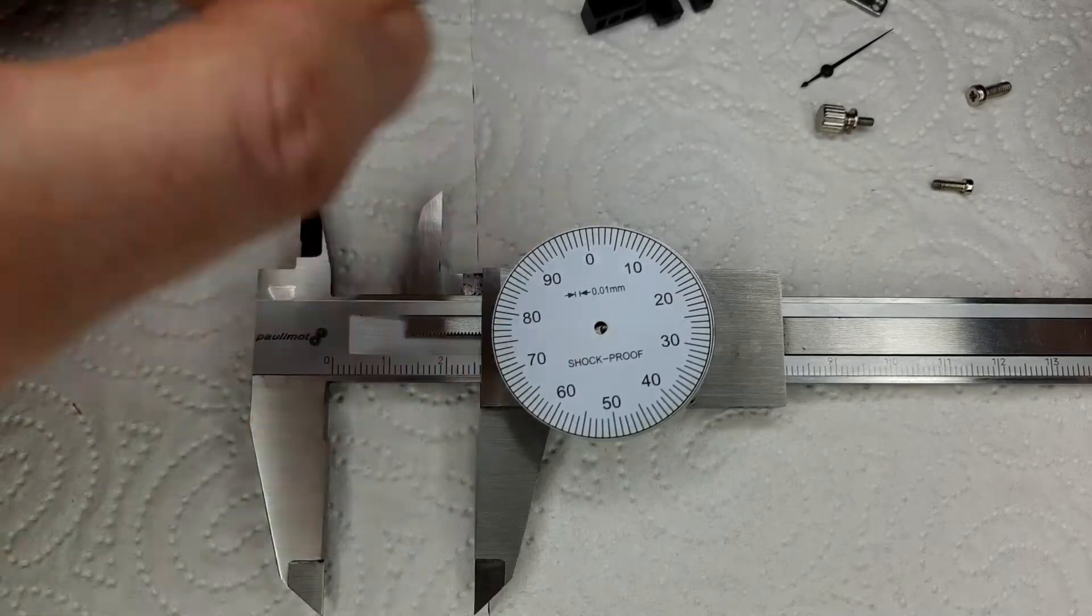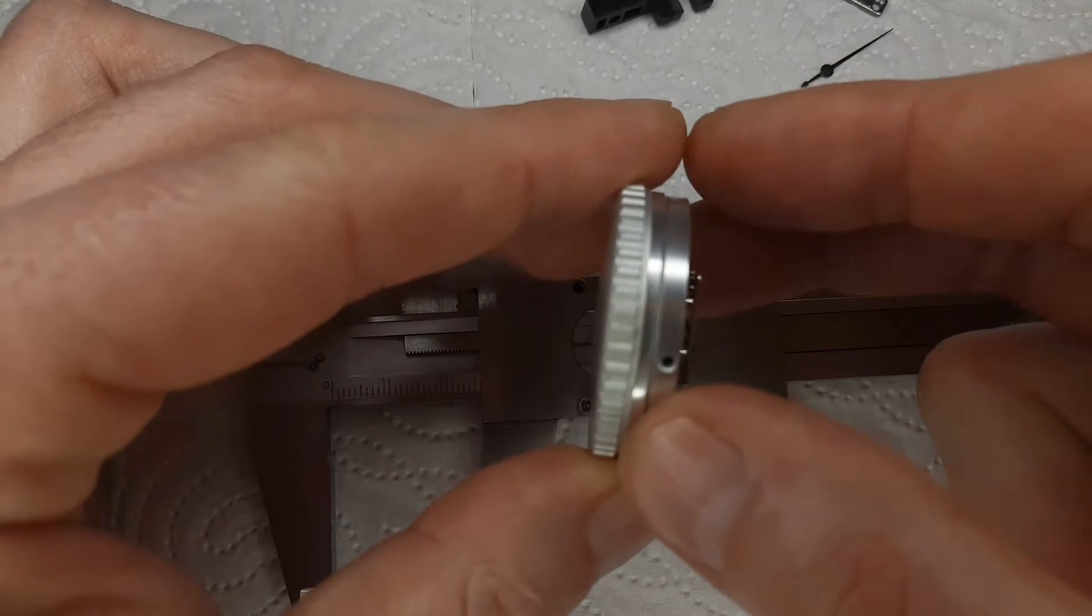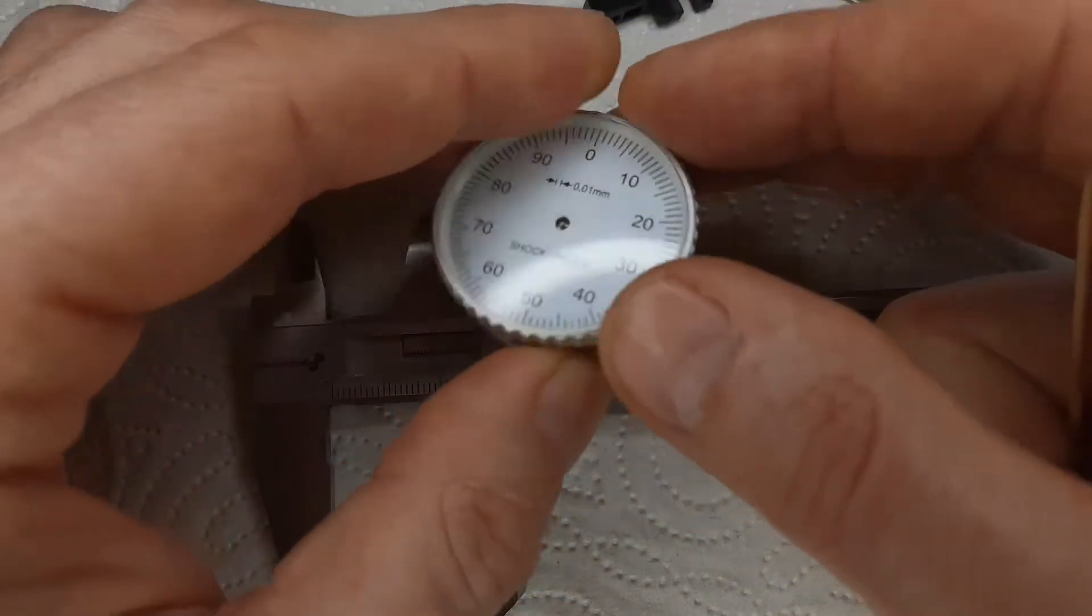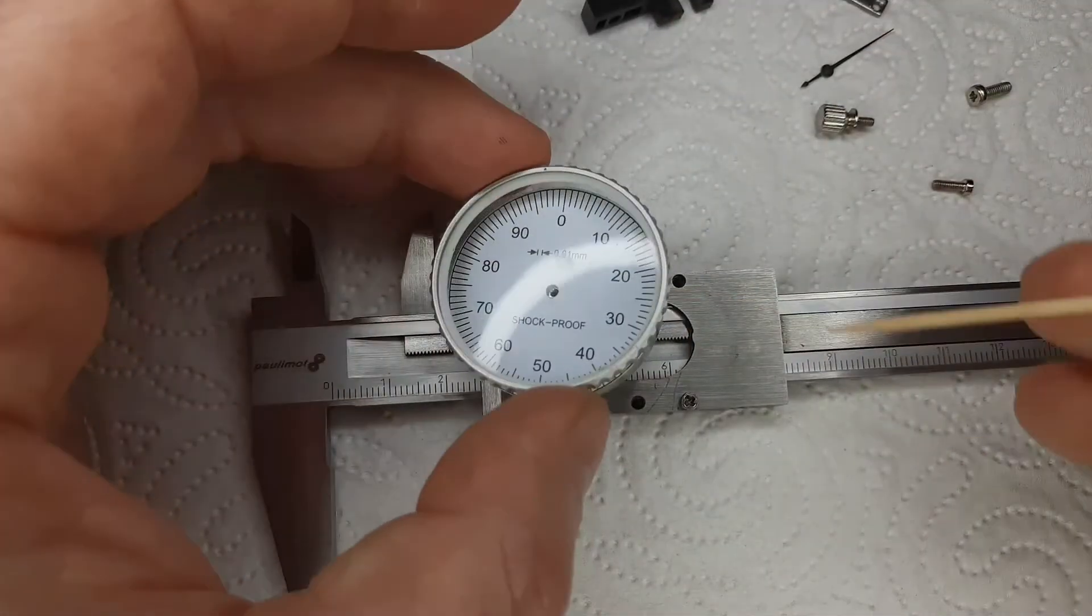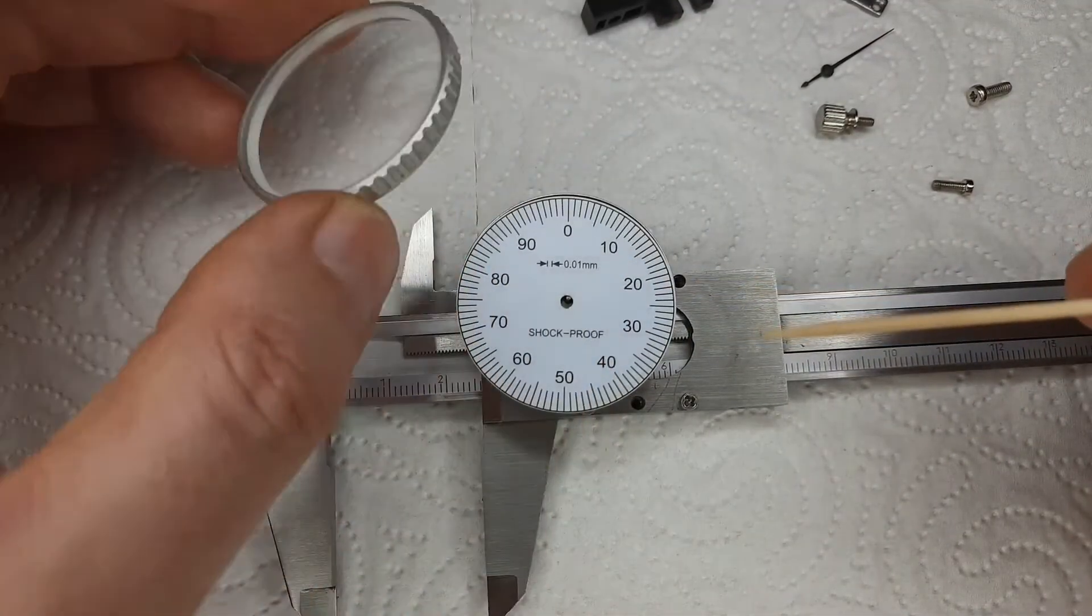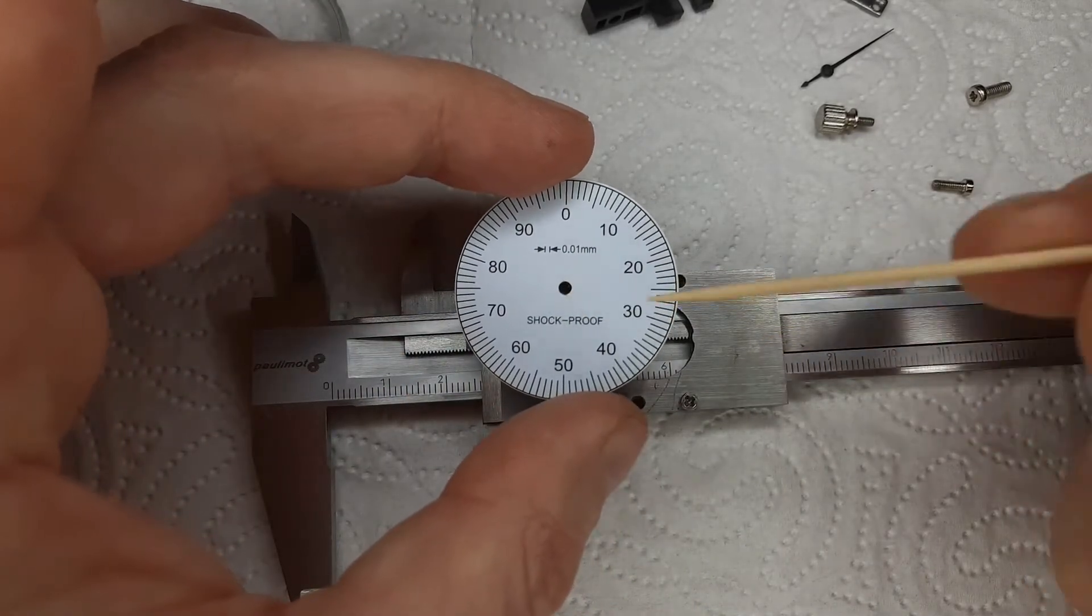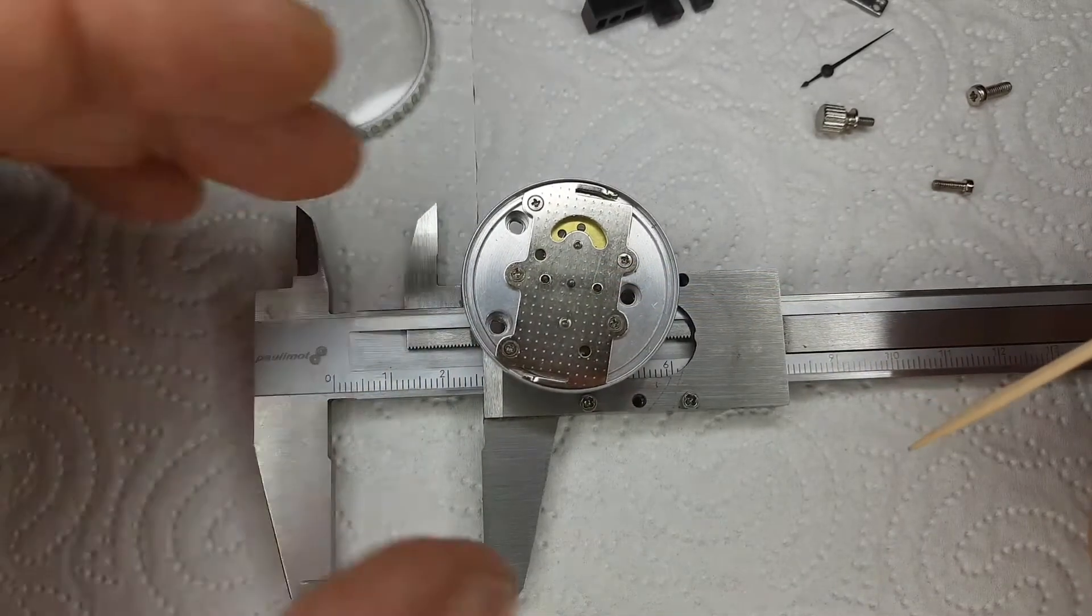And so my conclusion was the easiest way to solve my problem is to slightly move around that gear rack. Because this one is easily accessible from behind, just secured by three little screws. And so I tried to loosen the screws and move around that gear rack, but it didn't work.